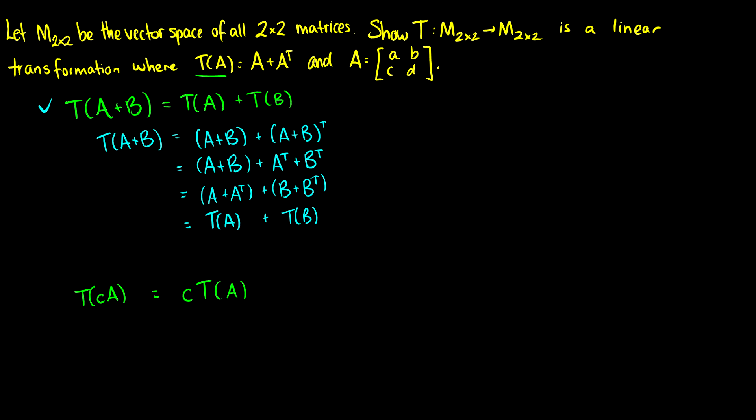Our second condition, take a scalar multiplied by A, transform that, that's the same thing as taking the scalar then multiplying the transformation. So T of C times A, well this is just going to be C times A plus CA transpose.